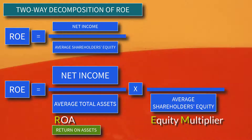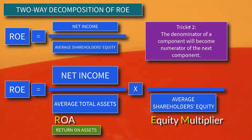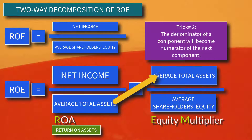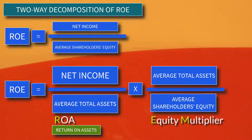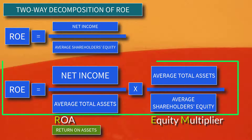Next, we apply the second trick: the denominator of a certain component will become the numerator of the next component. Therefore, the next component will have Average Total Assets as numerator. When we do elimination, the final result will be Net Income over Average Shareholders' Equity — the original formula of ROE. So this is our formula for two-way decomposition of ROE.